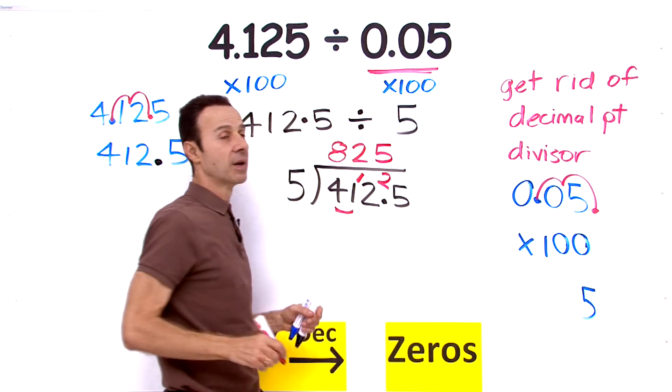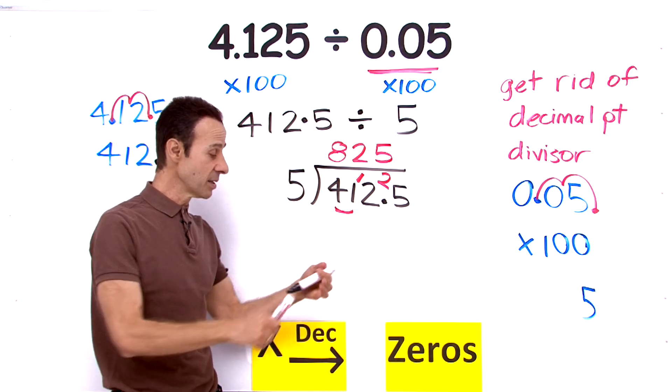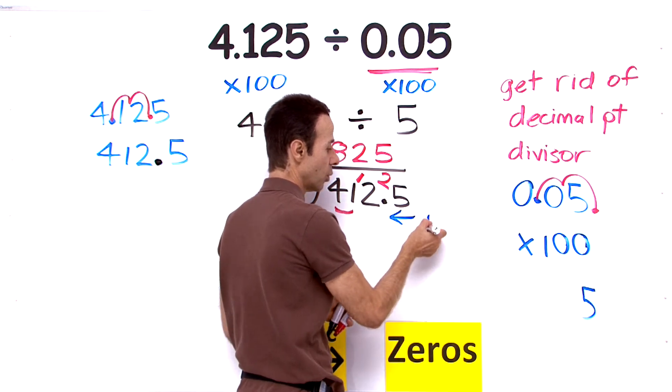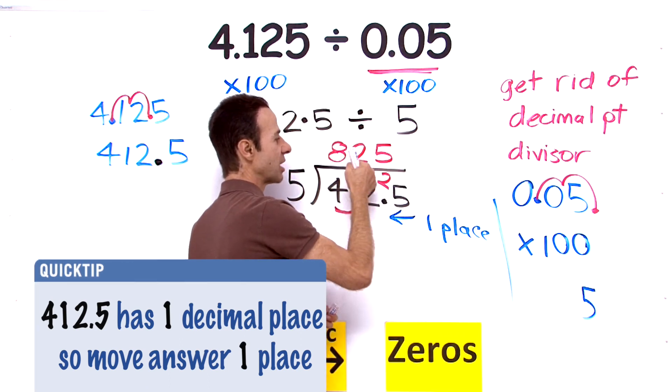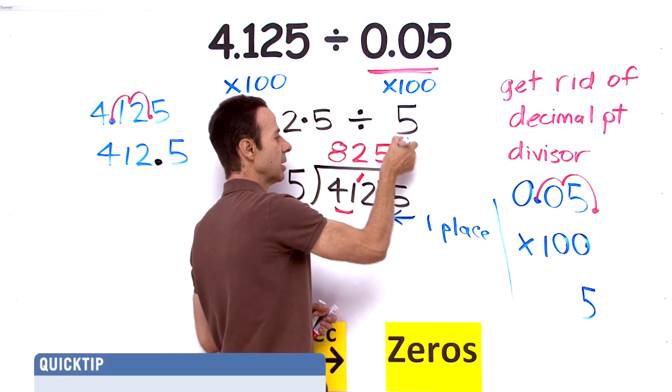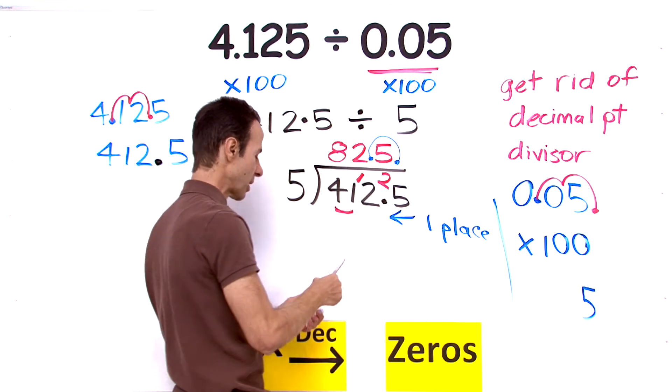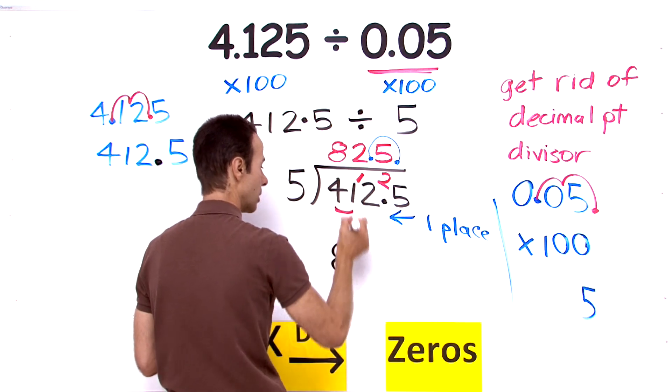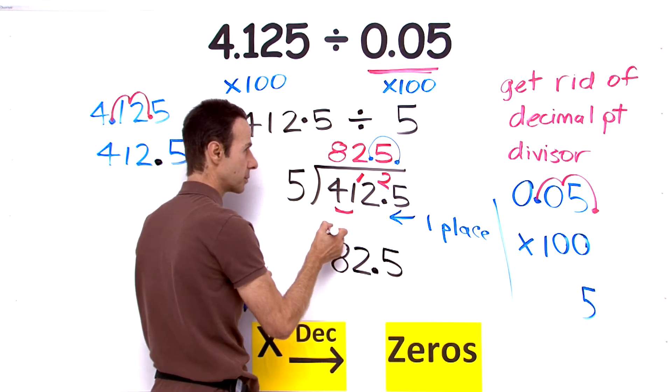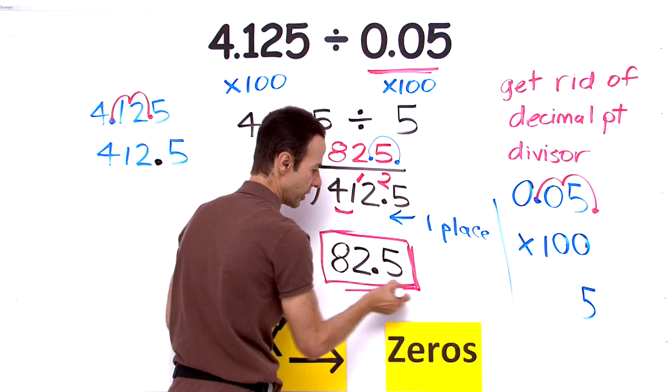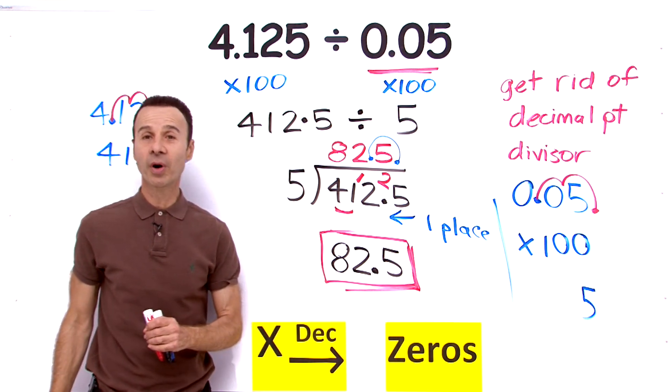Now we can introduce the decimal point which is down there. We go in one place. One decimal place, one place this way. So the new decimal point is right there between the 2 and the 5, so it is 82.5. So let me write that down over here: 82.5. So again, 4.125 divided by 0.05 is 82.5. There you go.